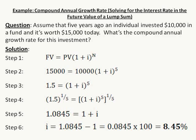Now raise each side to the 1/5th power. So 1.5 raised to the 1/5th power equals 1 plus I to the 5th, raised to the 1/5th power. On the right side, those powers cancel each other out, so you'll be left with 1 plus I in Step 5. On the left side, you have 1.5 raised to the 1/5th power, which is the same as 1.5 raised to the 0.2 power.